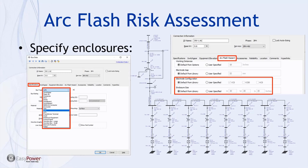Selecting the bus type populates the enclosure with information about the physical characteristics of that enclosure, shown on the right under the arc flash hazard tab. Default enclosure sizes are based on manufacturer data provided to EasyPower, adjusted to be applicable for most installations of that type of equipment. However, the program does allow you to get very detailed and user-specify those enclosure characteristics on an enclosure-by-enclosure basis.